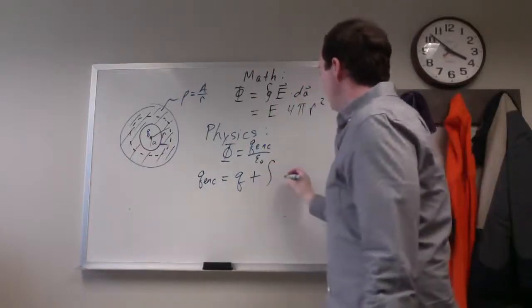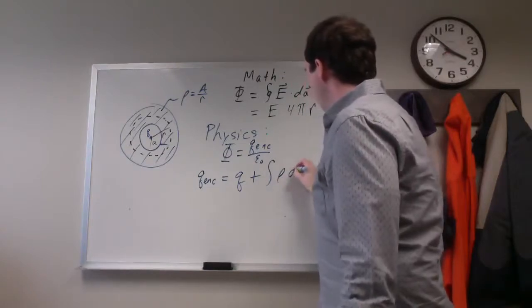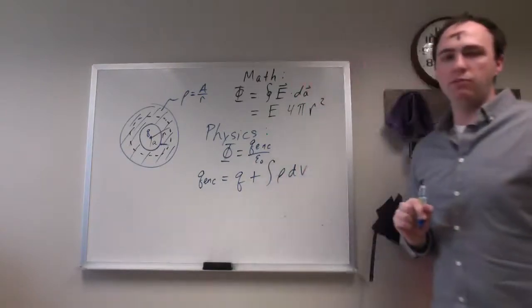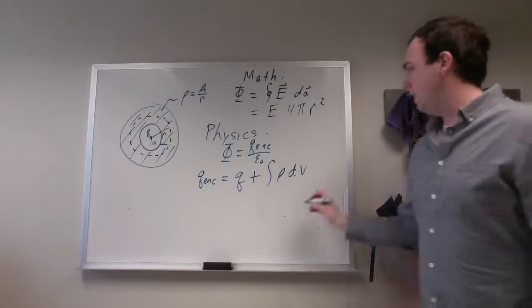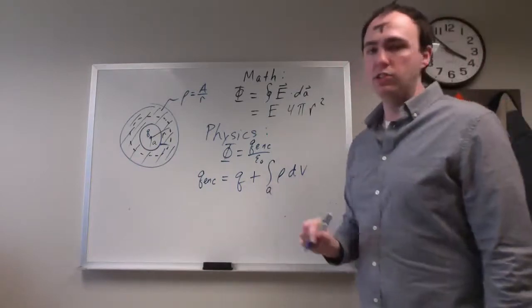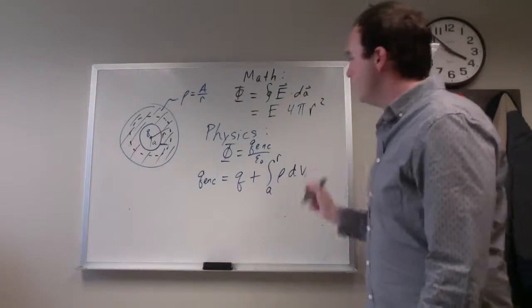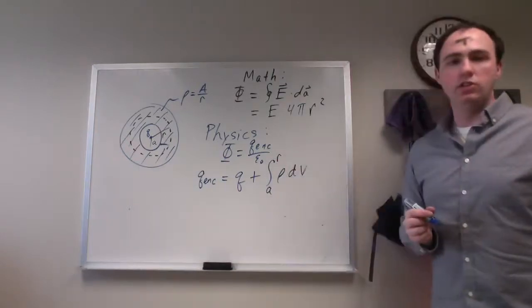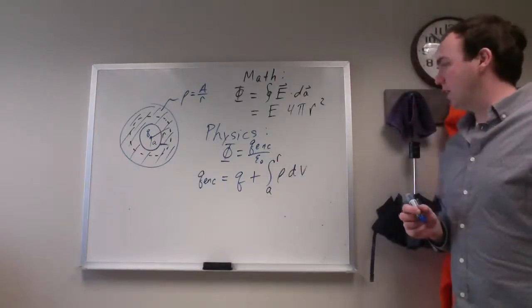The integral is going to be rho times the bit of volume integrated from where you first start having charge out to the farthest radius, which will be to the location of the Gaussian surface.